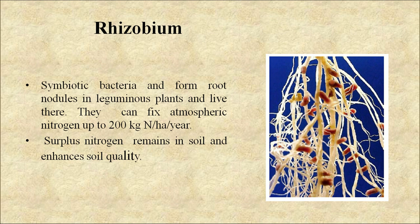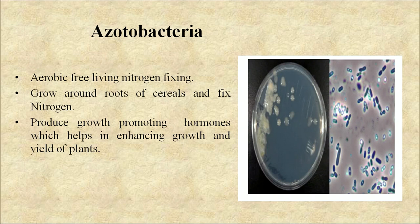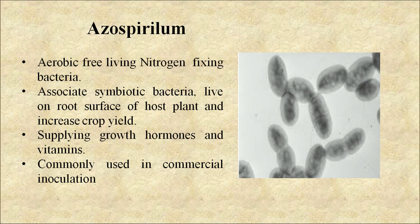First, rhizobium — it is a symbiotic bacteria that forms root nodules in leguminous plants and lives there. It can fix atmospheric nitrogen up to 200 kilograms per hectare per year, and surplus nitrogen remains in the soil and enhances soil quality. Next is azotobacterium — these are aerobic free-living nitrogen-fixing bacteria that grow around roots of cereals and fix nitrogen. They also produce growth-promoting hormones which help in enhancing growth and yield of plants. Next is azospirillum — aerobic free-living nitrogen-fixing bacteria, associative symbiotic bacteria that live on root surfaces of the host plant, increase crop yield by supplying growth hormones and vitamins, and are commonly used in commercial inoculation.